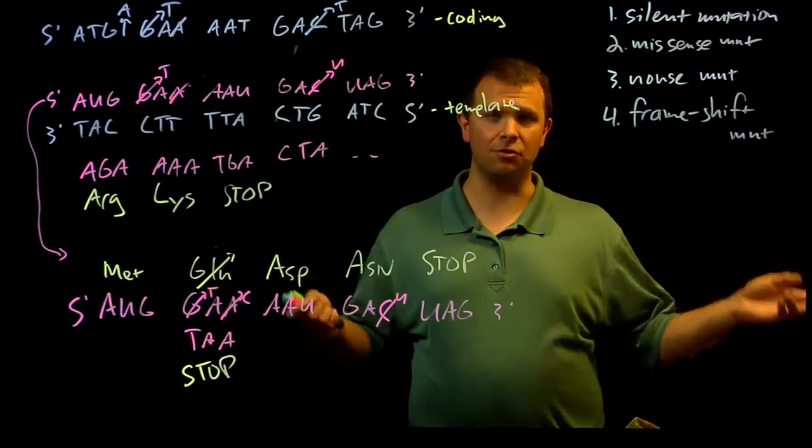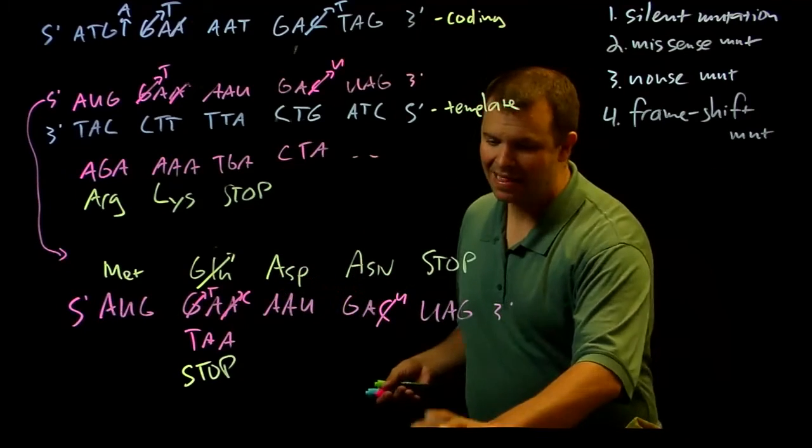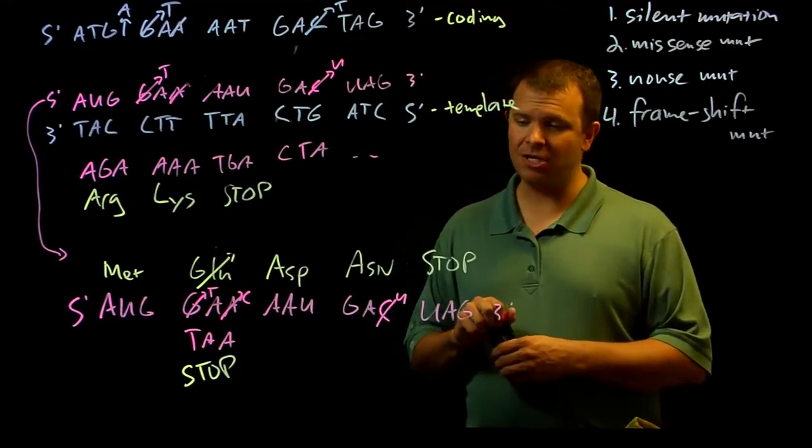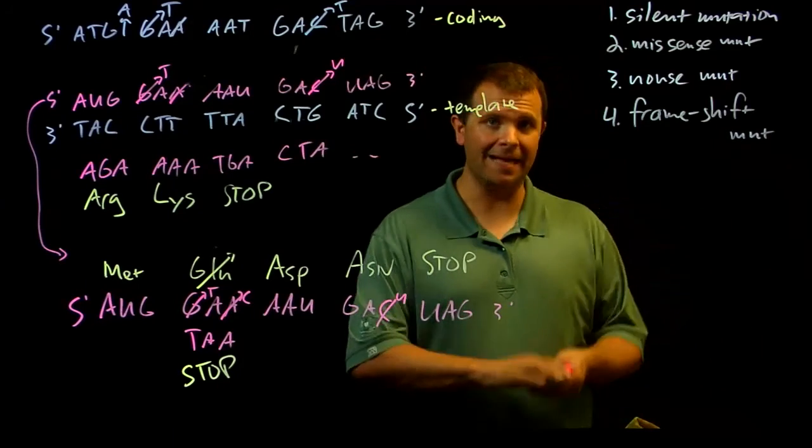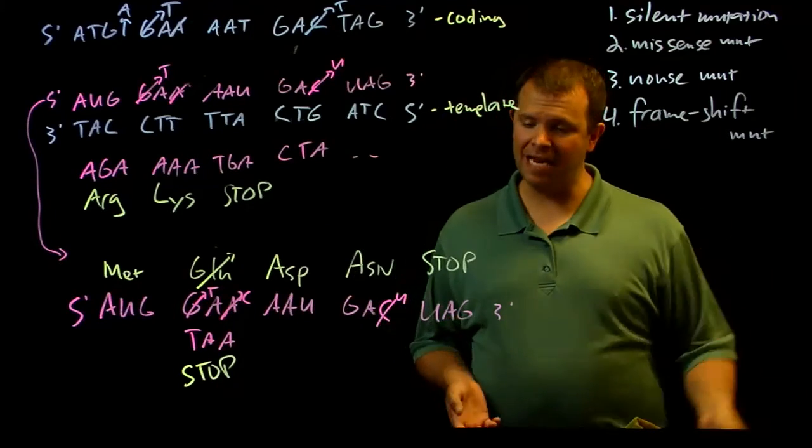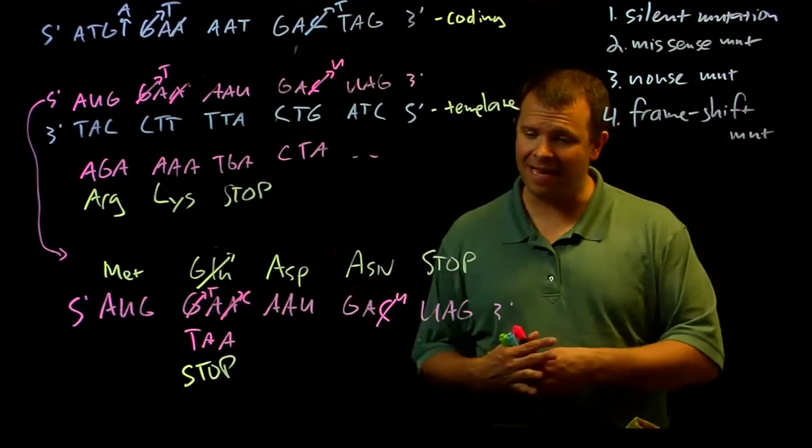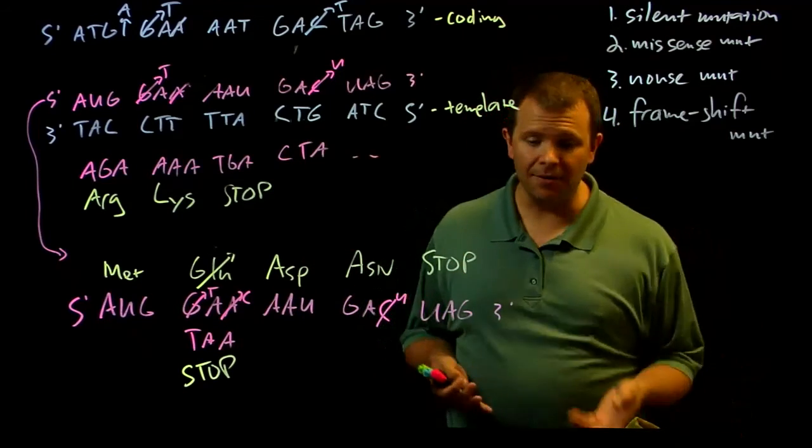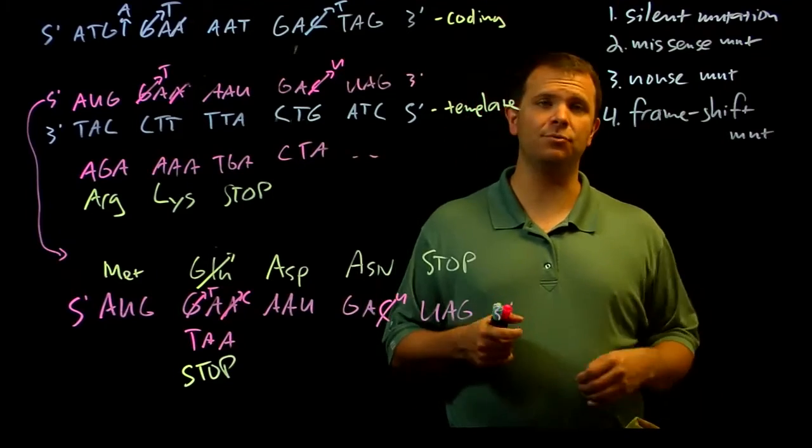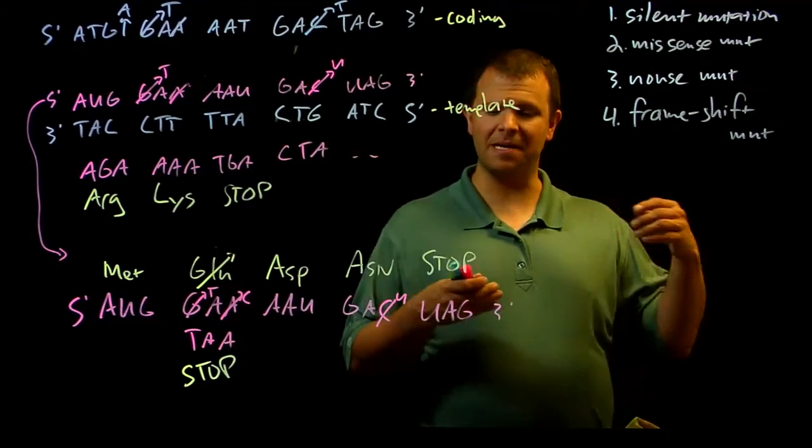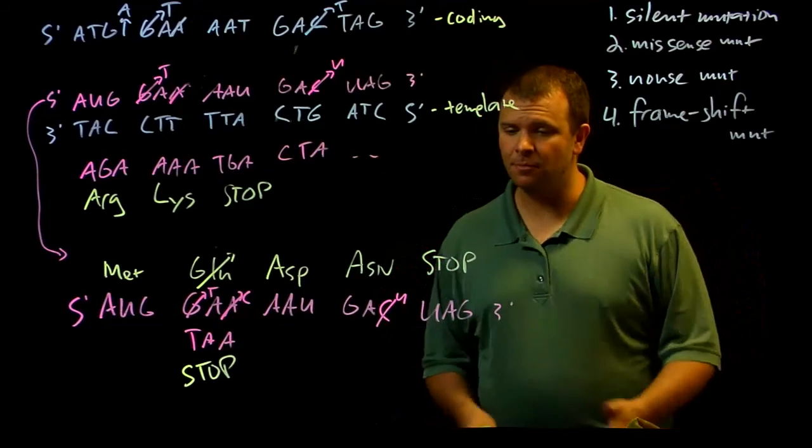They cause that protein to break or not function in the way that it should. But some of them occasionally are beneficial, and a beneficial mutation can provide a reproductive advantage to individuals that inherit those alleles. Those individuals are more fit and that allele becomes more common as those individuals reproduce more.